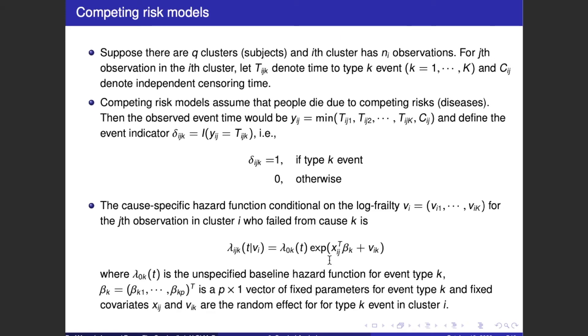Where lambda_0k(t) is the unspecified baseline hazard function for event type k. Beta_k equals (beta_k1, ..., beta_kp) transpose is a p cross 1 vector of fixed parameters for event type k, and fixed covariates x_ig and V_ik are the random effects for type k event in cluster i.